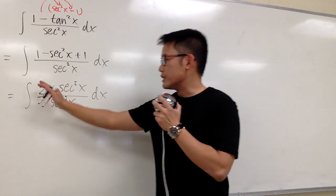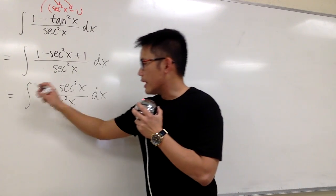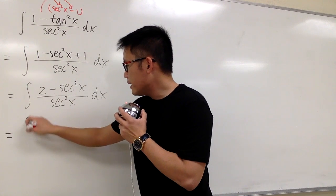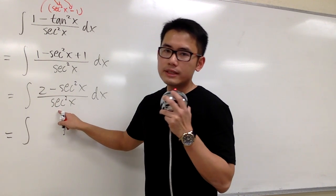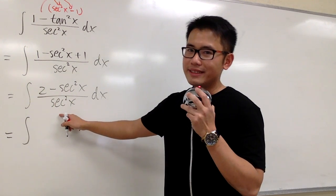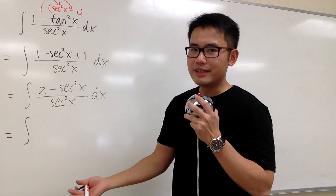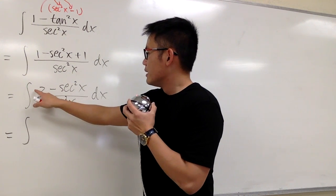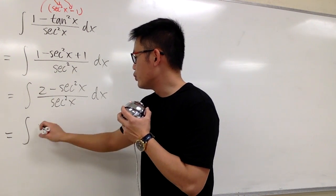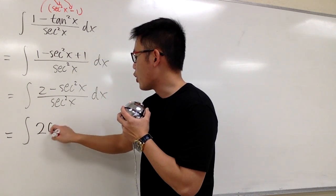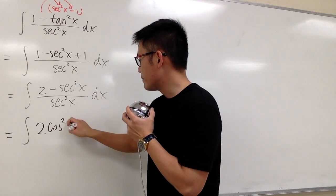And what next is, I'm going to split the fraction. As we can see, we will get integral 2 over secant square, but then we know secant square in the denominator is the same as cosine. So we have 2 over this, which we can write it down as 2 cosine, but that was a square, x.